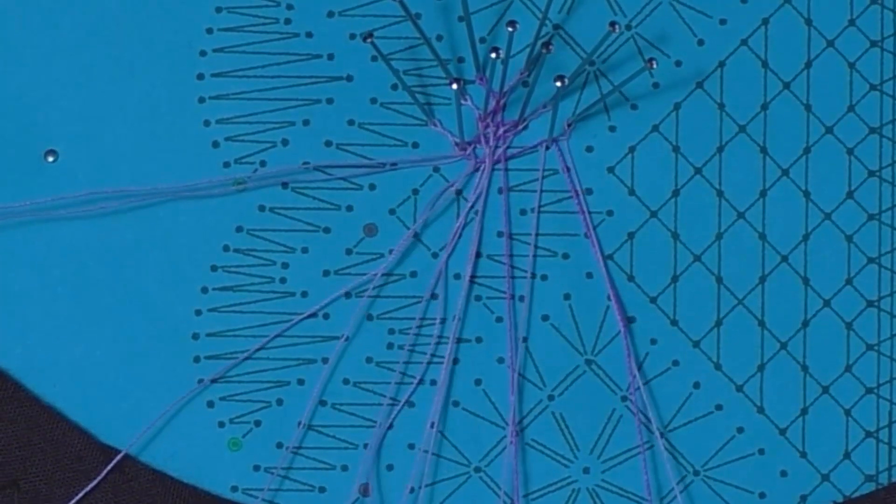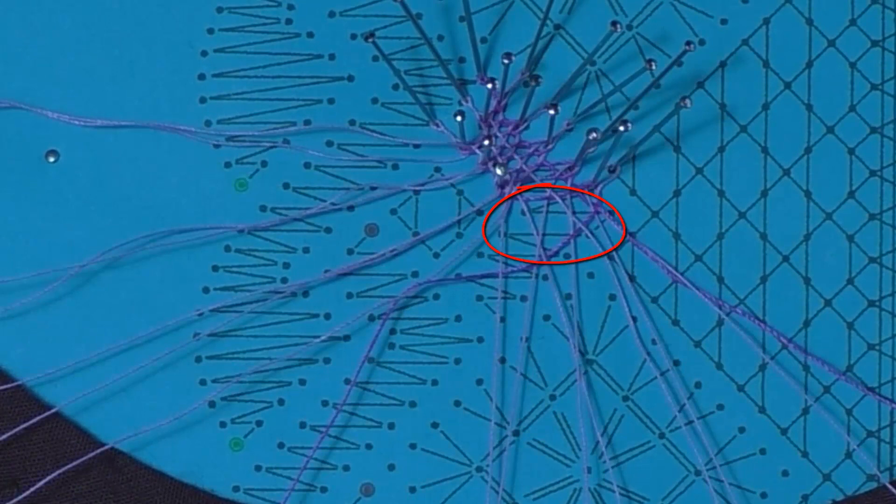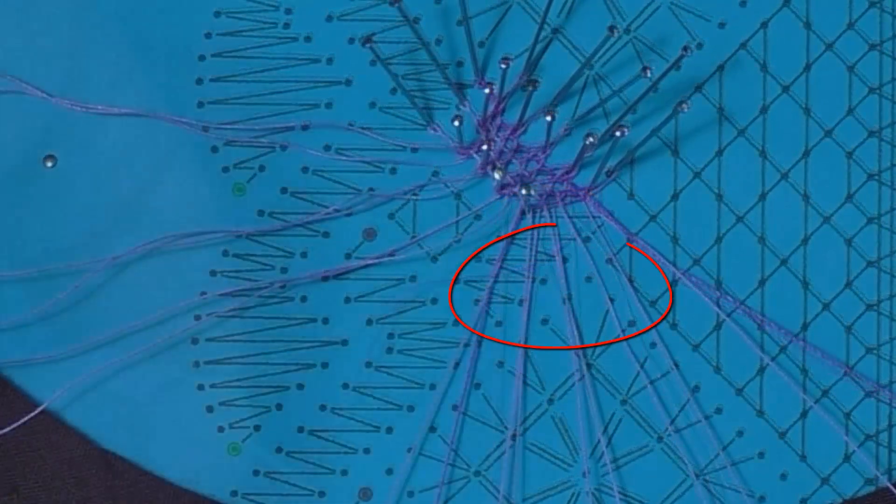Note that when you tension the work, it is every second thread being tensioned that affects the work above. There should be twisted pairs above the weaver thread and different twisted pairs below.